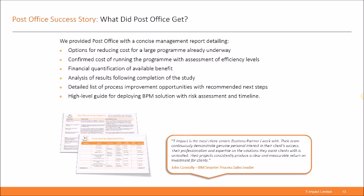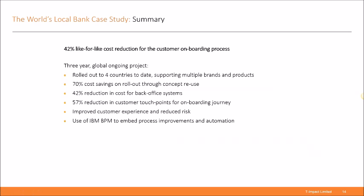The second case study is at the world's local bank, where we're now in our third year working on a global transformation program to reshape the onboarding process in the retail bank for customer loans, credit cards, and mortgages. This is a huge international BPM project. We've worked to streamline the processes across countries, embedding IBM BPM as a process automation solution to ensure adherence to process changes. They gave us the opportunity to run a head-to-head test of operators using the old system versus the new system. In this test, we proved a 42% like-for-like cost reduction for the end-to-end process. As a result, we won the bank's own global platinum award for the project. To date, it has been rolled out in four countries with a 70% reduction in rollout costs for each new country, and we've reduced the number of customer touch points by 57%.